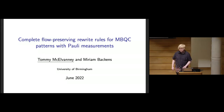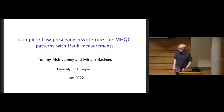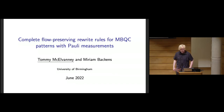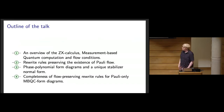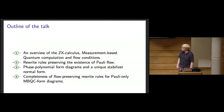Hi everyone, it's really exciting to give my first conference talk. First, I'll give some motivation for why we care about this. Several flow conditions have been introduced previously — they're sufficient conditions for determinism in measurement-based quantum computation, and importantly they've been proven to allow ZX diagrams with these flow conditions to be efficiently extracted to circuits. This problem is known to be #P-hard in general. Here's an outline: we'll cover an overview of the ZX calculus, measurement-based quantum computation, and flow conditions, then rewrite rules which preserve the existence of Pauli flow, then two new normal forms, and finally completeness of these flow-preserving rules.